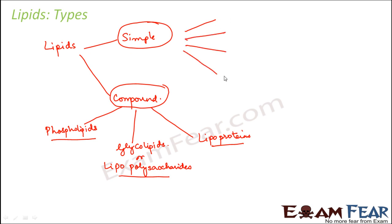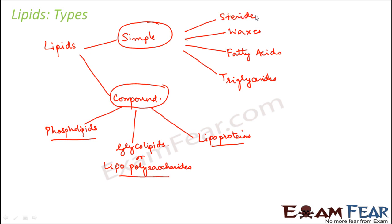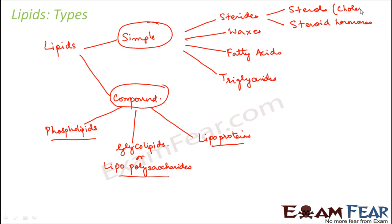Simple lipids, on the other hand, are pure lipids — they do not have any non-lipid component. The types under simple lipids are triglycerides, fatty acids, waxes, and sterides. Sterides can further be classified into sterols and steroid hormones. When talking about steroid hormones, examples are progesterone and testosterone. When talking about sterols, an example is cholesterol. So these are all pure lipids.